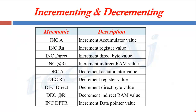This table indicates all possible incrementing and decrementing instructions for different source operands. Starting with INC A, which will increment the value of the accumulator; INC Rn, which will increment the value of a register.